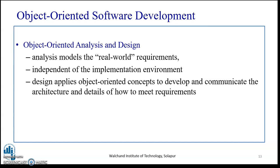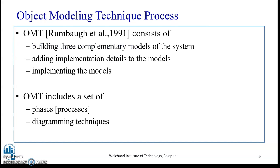The object modeling technique process, proposed by Rumbaugh in 1991, consists of building three complementary models of the system, adding implementation details to those models, and then implementing the model itself.